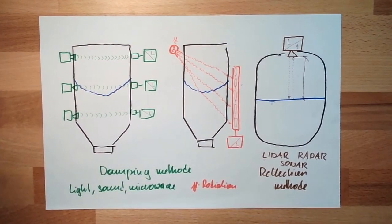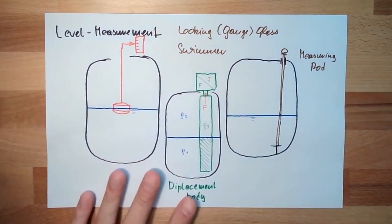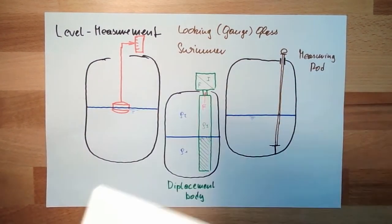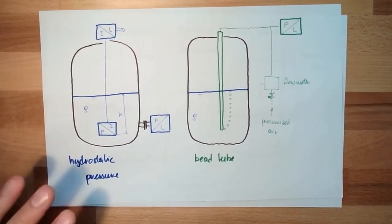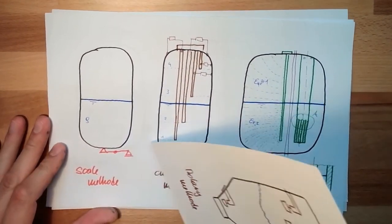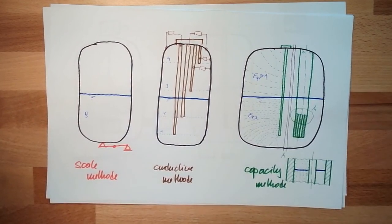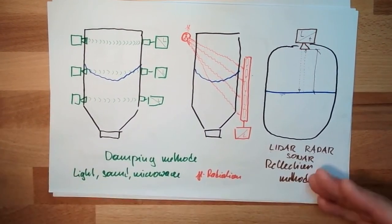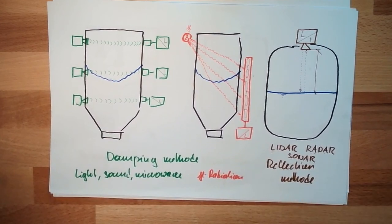So basically, that's about all possible methods. We have seen: the gauge glass, the swimmer and displacement method, the measuring rod, the hydrostatic pressure measurement, the bubble tube method, the scale/weighing method, the conductive method, the capacitive method, the rotary method, the plumb line system, the damping method, and the reflection method. Quite some methods to measure levels in tanks. That's it for now — thank you very much for listening, goodbye.